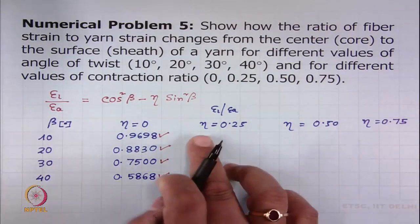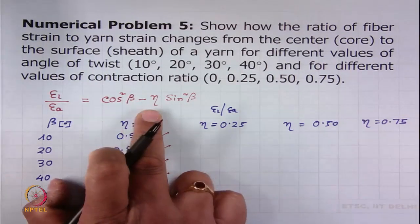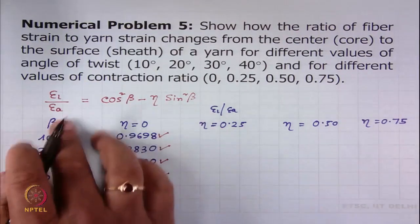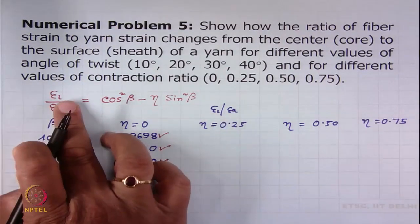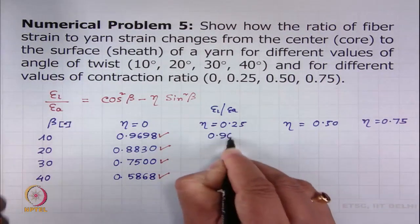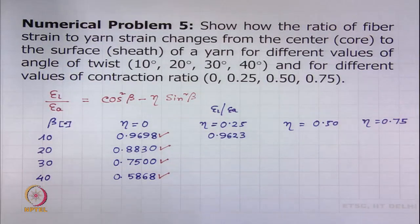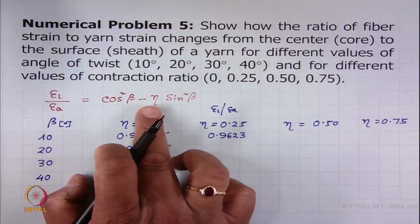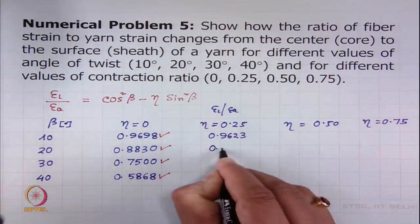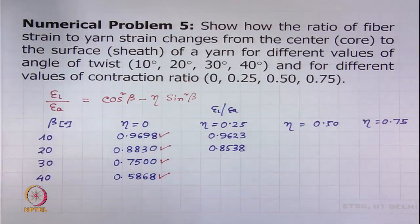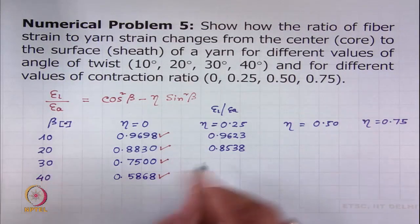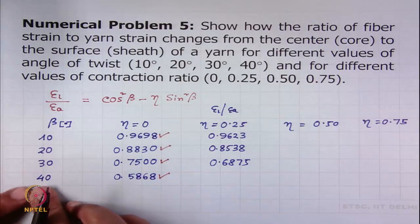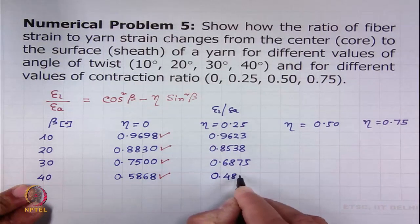Let us start with contraction ratio 0.25. If eta is equal to 0.25 when beta is equal to 10 degrees, the value of the ratio epsilon_l to epsilon_a will be 0.9623. Similarly, when beta is equal to 20 degrees, epsilon_l by epsilon_a will be 0.8538. For beta 30 degrees this value will be further less at 0.6875, and when beta is 40 degrees then this value is remarkably less at 0.4835.